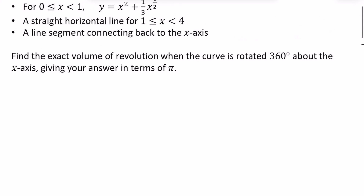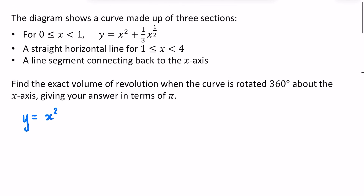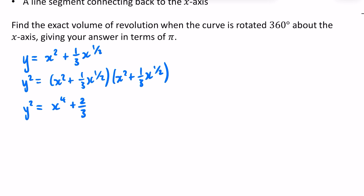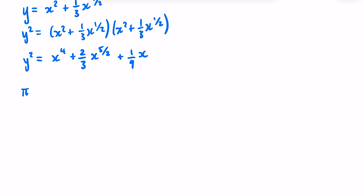We have that y = x² + (1/3)x^(1/2), and I'm going to calculate what y² is. So y² equals (x² + (1/3)x^(1/2)) multiplied by (x² + (1/3)x^(1/2)). We get x⁴, then (1/3)x^(1/2) times x² gives two of those — so (2/3)x^(5/2). Then (1/3) × (1/3) = 1/9, and x^(1/2) × x^(1/2) = x. So the integrand is π(x⁴ + (2/3)x^(5/2) + (1/9)x) dx, with limits 0 to 1.